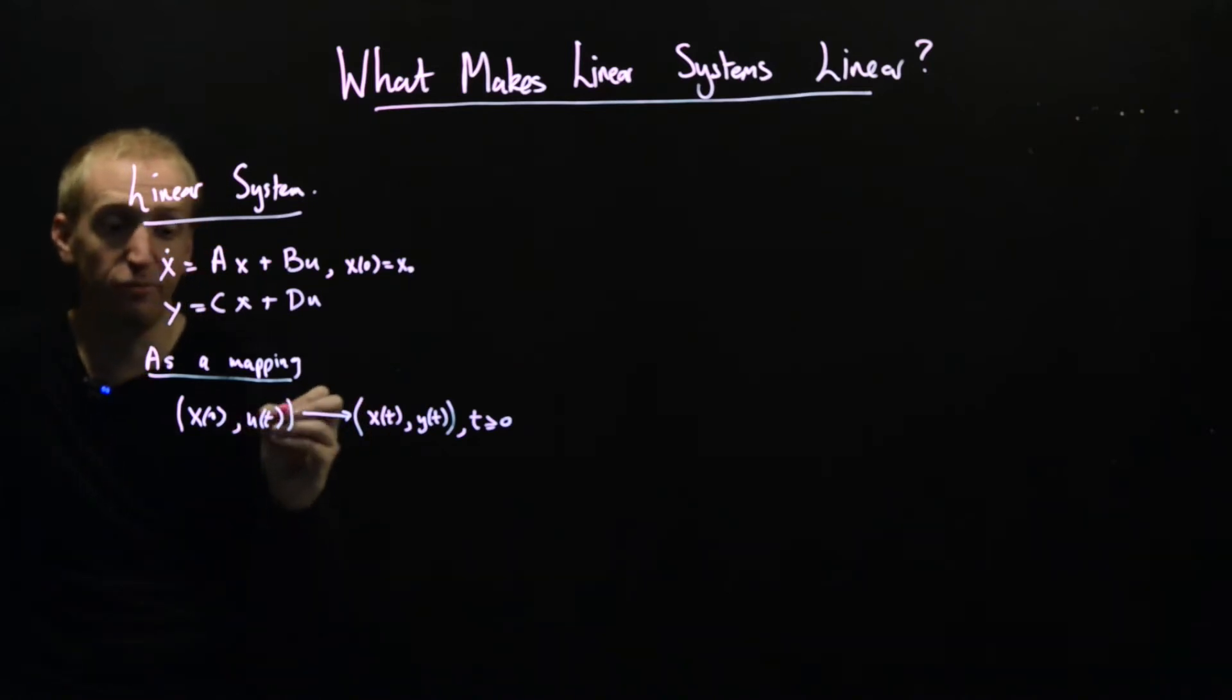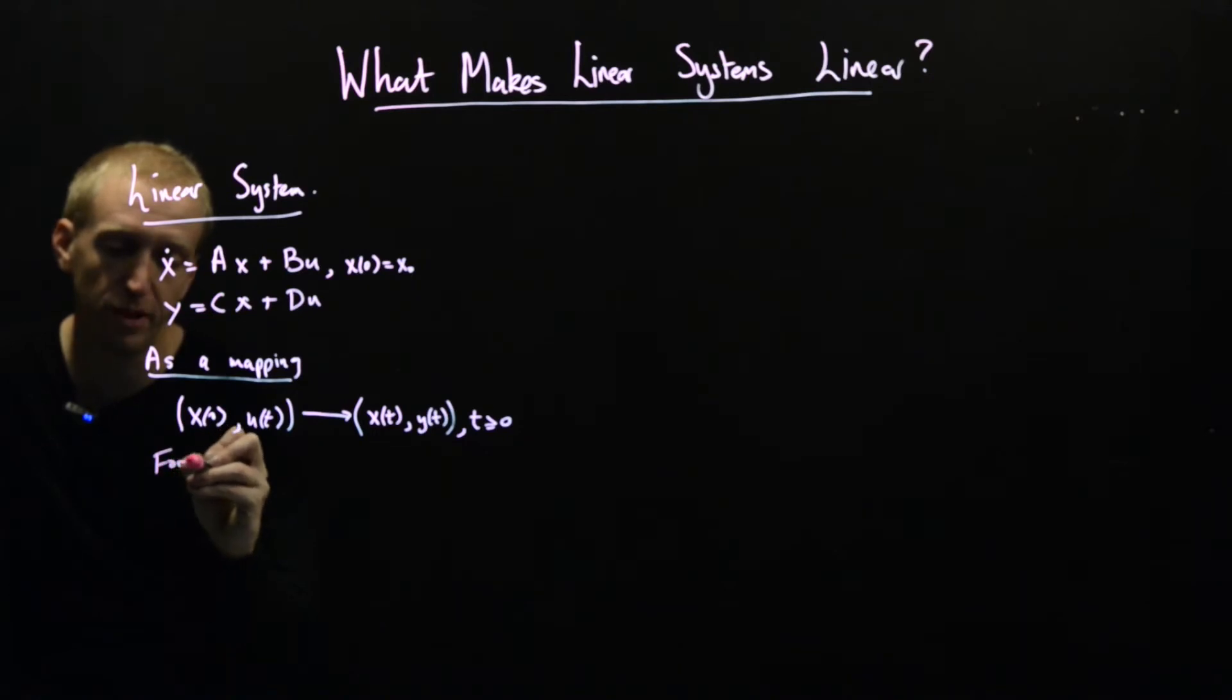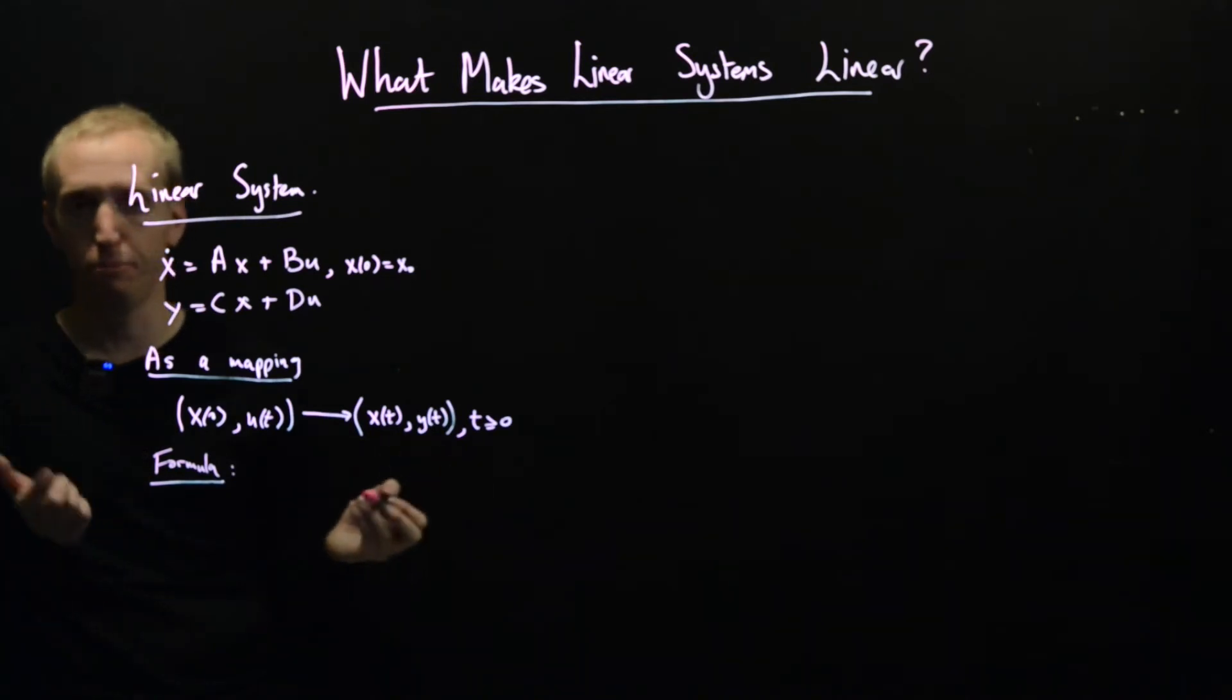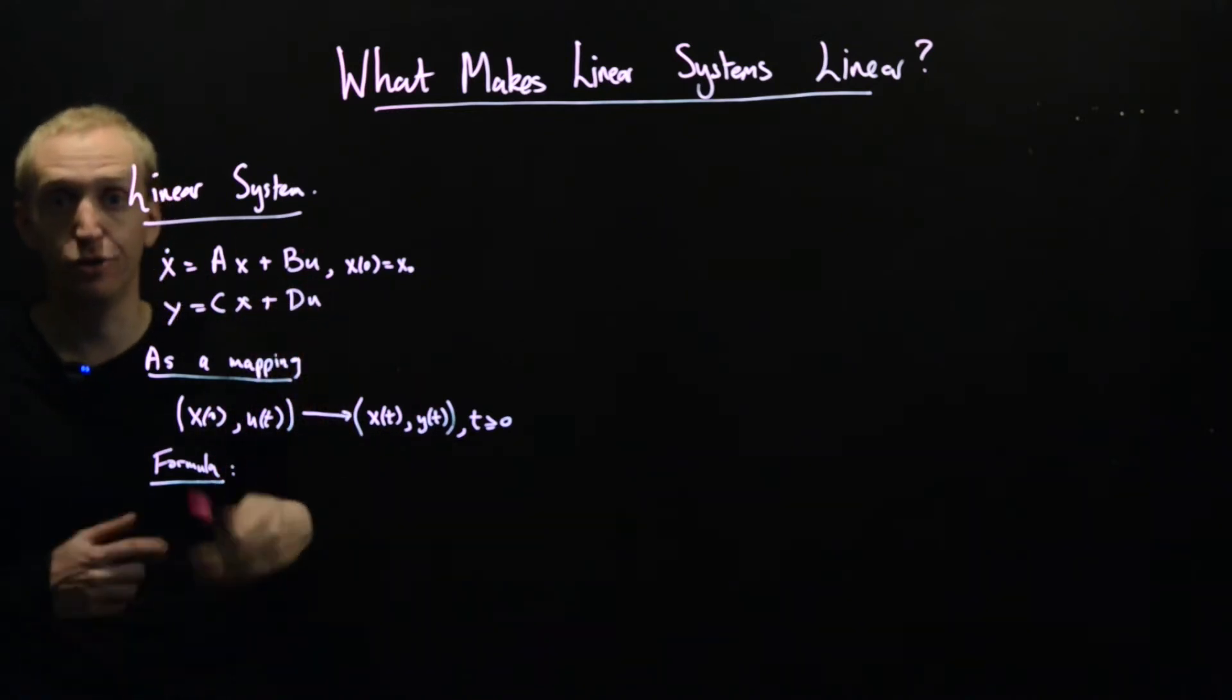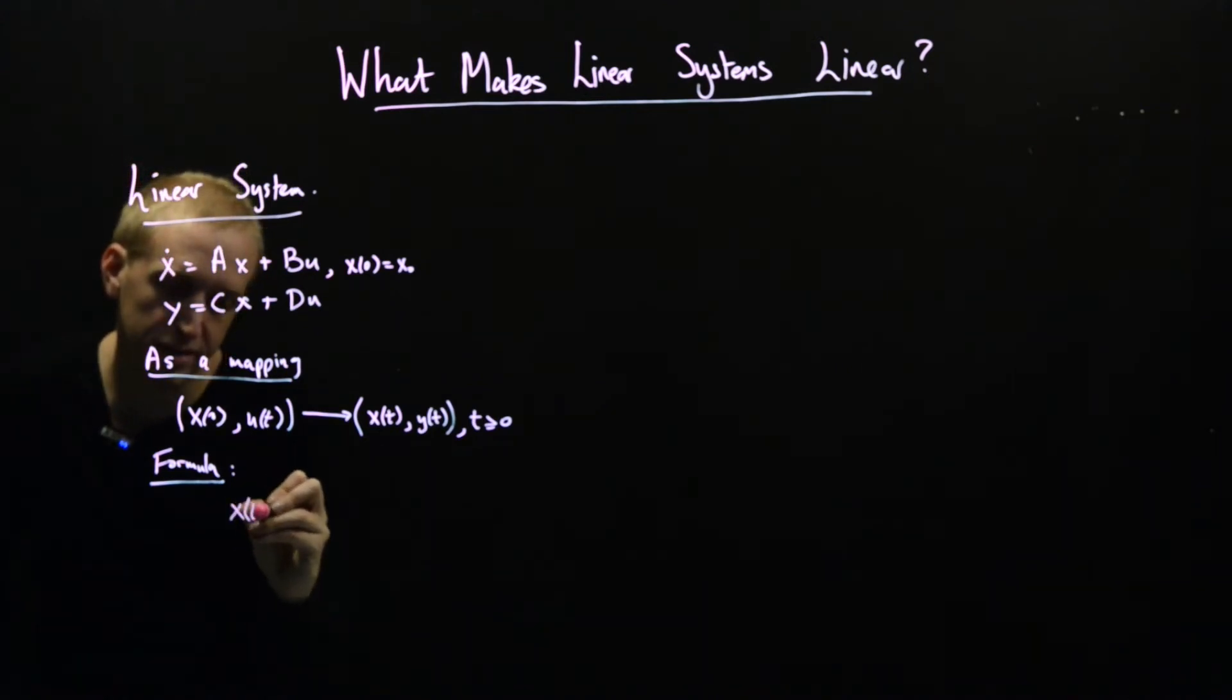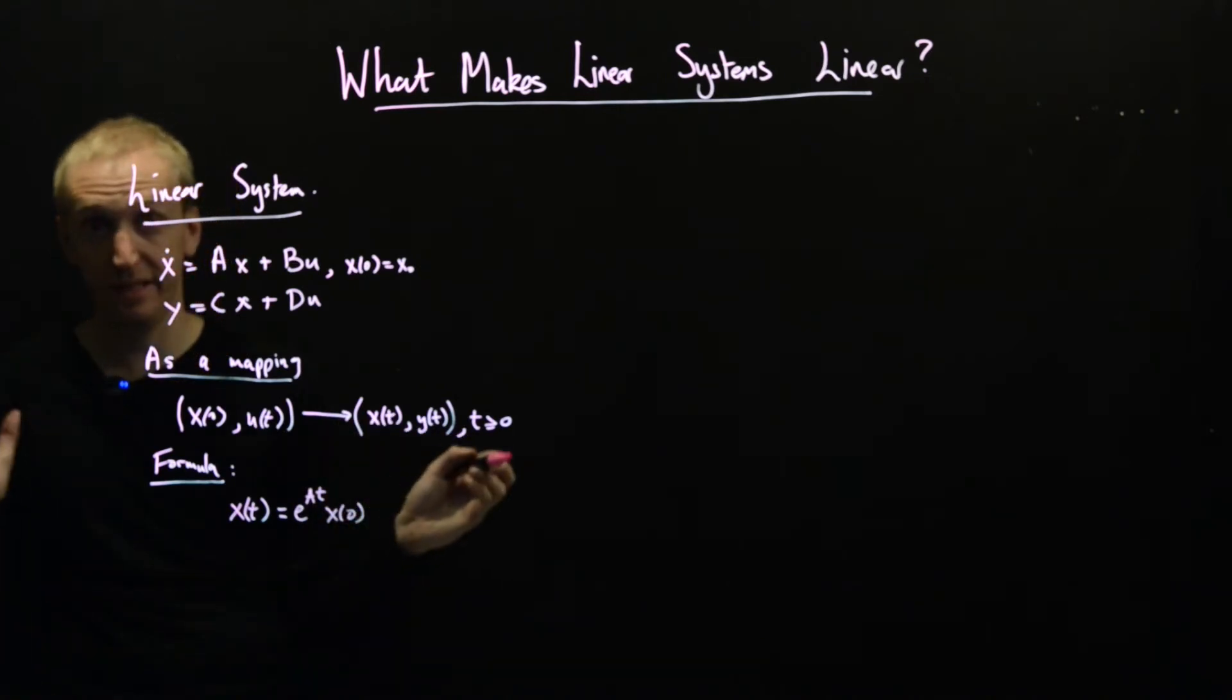And indeed for linear systems there's even a nice formula for this mapping. You will have seen this formula before. There's probably never been any emphasis put on it. It's not particularly important. The only real point I'm making here is that we have this mapping and that's really what the differential equation is telling us. And that formula just for completeness, it looks something like x of t equals e to the At times x of zero. So this thing is the matrix exponential, the details aren't important.